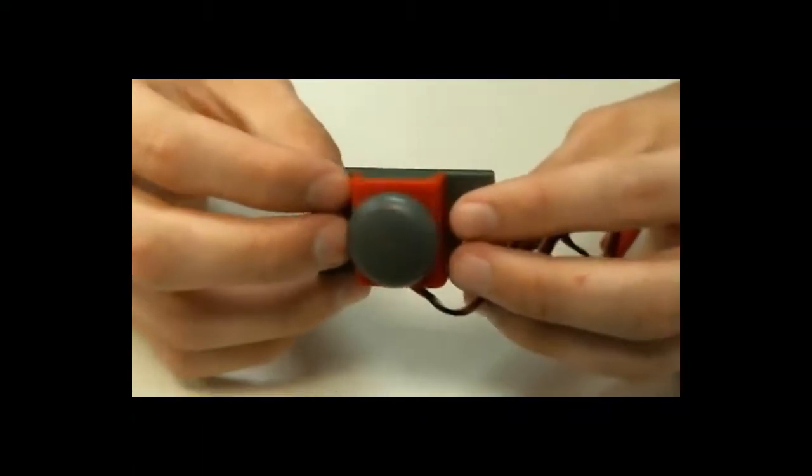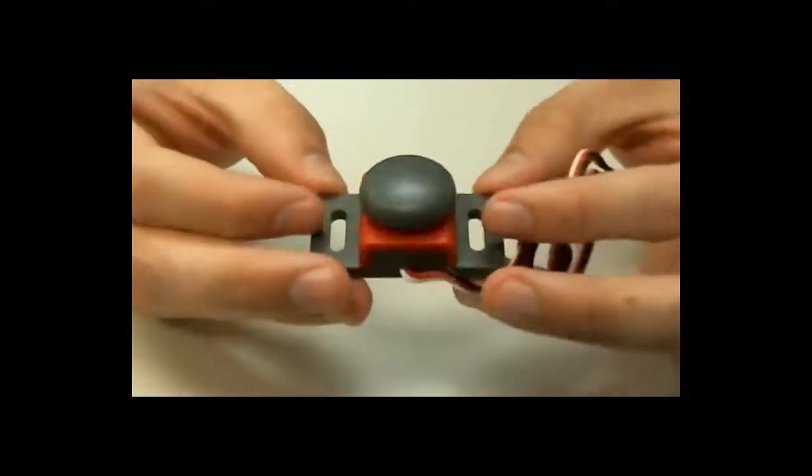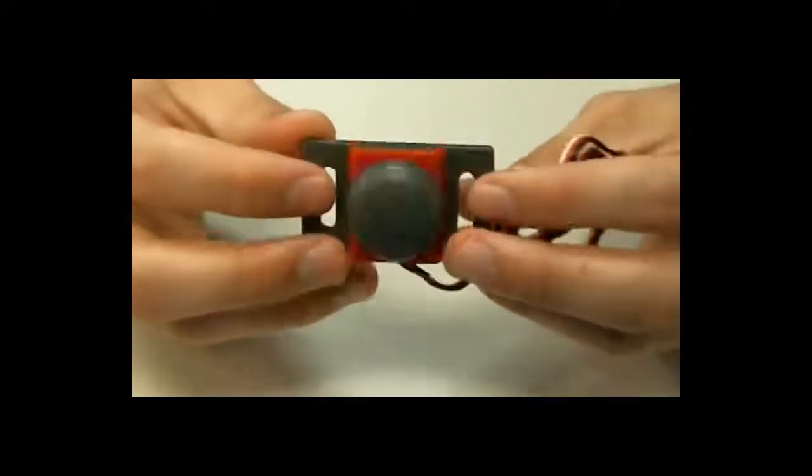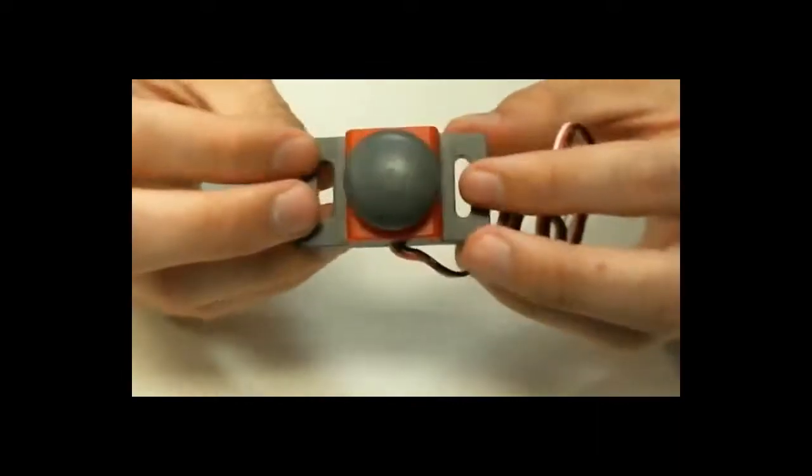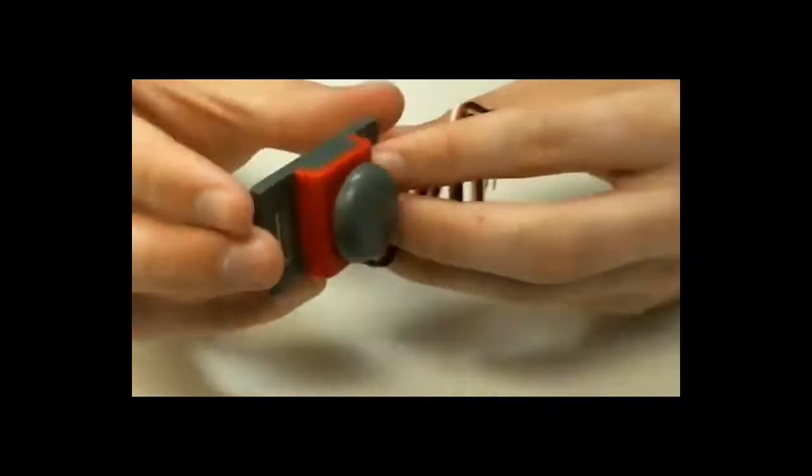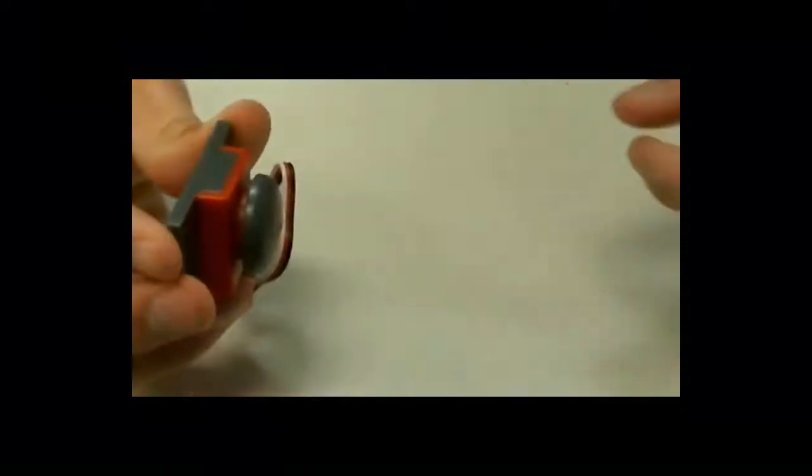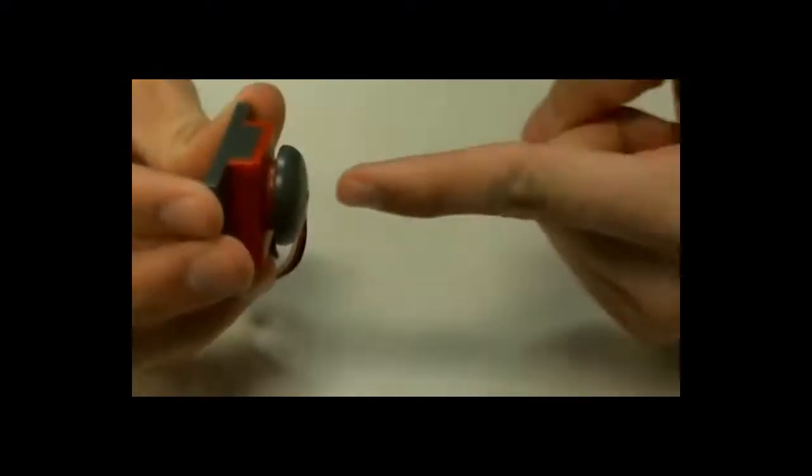Alright, so in your kit you have a couple of these guys. This is just your standard VEX bumper switch. And all it is is a depressible button that mounts parallel to the action that trips it. So what that means is that if you mount this horizontally, the action that trips it will be horizontal.